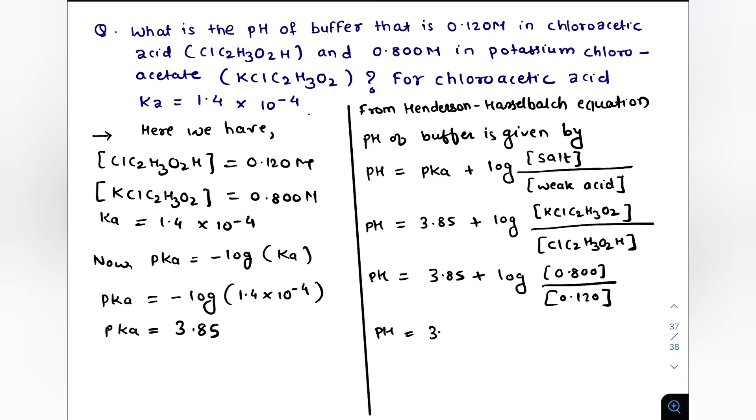And this value is going to be pH equals 3.85 plus we can calculate this by using the calculator and it is going to come out to be 0.82. Therefore pH equals 4.67. So the pH of this buffer is 4.67.